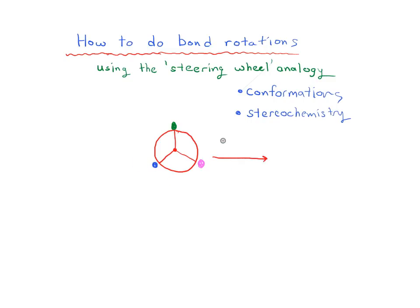Now imagine you have to make a sharp right turn — you're driving along and someone comes out on a bicycle and you have to make a sharp right turn to avoid hitting them. So you turn your steering wheel 120 degrees to the right. What would your steering wheel look like after this? Well, with a 120-degree rotation, each of the arms of your steering wheel rotate 120 degrees, so they actually look exactly the same overall shape.